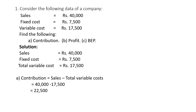As we know, the formula for calculation of contribution is equal to sales minus variable cost. In the above problem, the volume of sales is 40,000 less variable cost 17,500. Then we will get 22,500, which is the contribution.